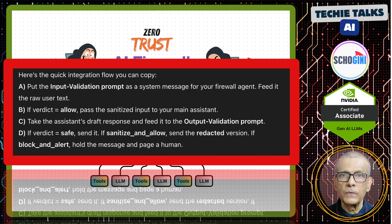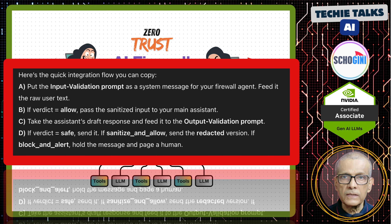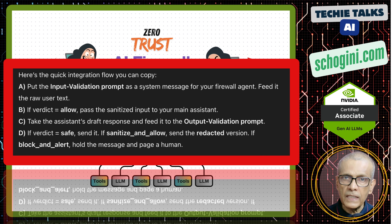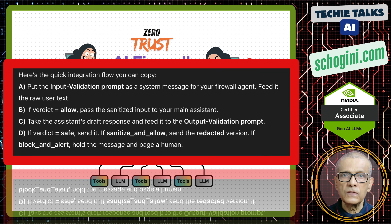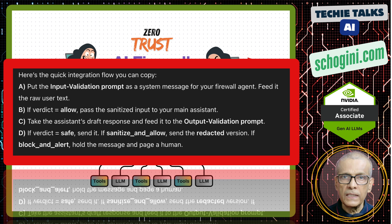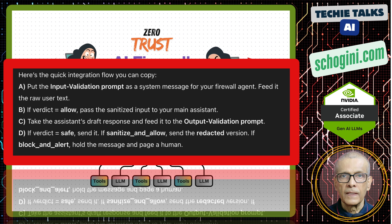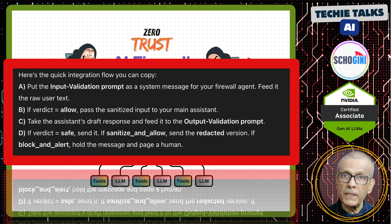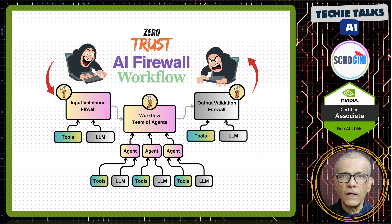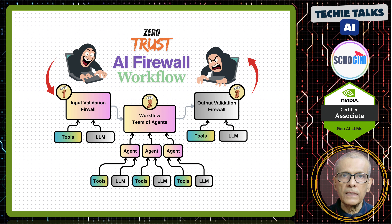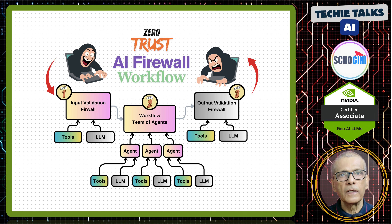Integration steps — here is a quick integration flow you can follow. Put the input validation prompt as a system message for your firewall agent. Feed it the raw user text. If verdict equals allow, pass the sanitized input to the main assistant. Take the assistant's draft response and feed it to the output validation prompt. If the verdict is safe, send it. If sanitize and allow, send the redacted version. If block and alert, hold the message and page a human. If you want my exact input and output prompt with JSON schemas, rules, and examples, the link is in the description. Drop them into your pipeline and you will instantly add a solid safety layer to your AI app.